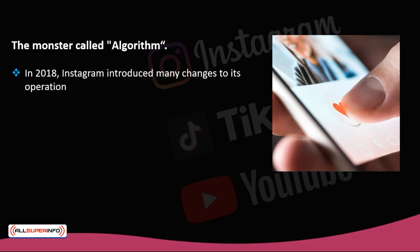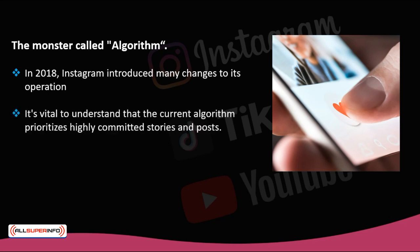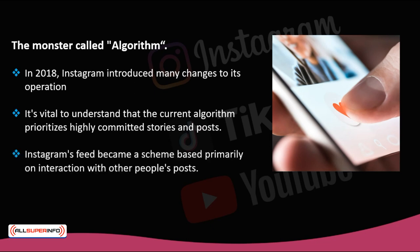Under these conditions, is it possible to adapt and overcome the Instagram algorithm? It's vital to understand that the current algorithm prioritizes highly committed stories and posts. Communication using different Instagram tools such as stories is something of value to the algorithm. For this reason, resources like Instagram Stories and Instagram TV will continue to evolve, becoming essential aspects of your marketing strategy. The algorithm includes the number of likes, comments, video views, saves, forwarding, direct messaging, and any other interactions a post receives.